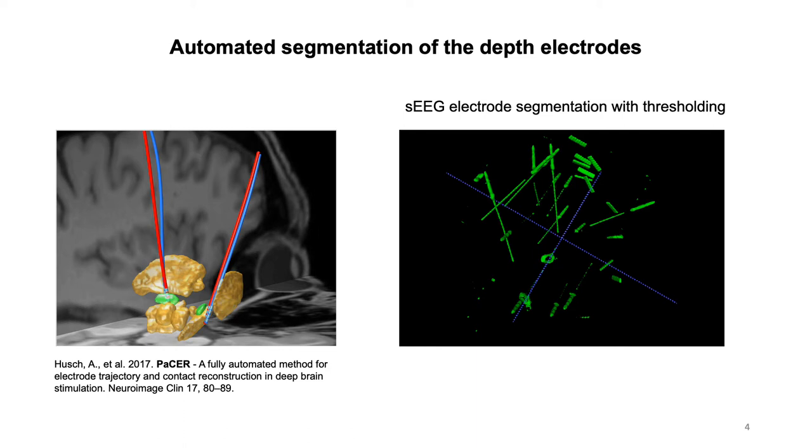Automated and accurate electrode extraction approaches are existing for DBS electrodes. However, to our knowledge, there is no available tools for segmentation of SEEG electrodes. But we wanted by including postoperative DBS scans to increase dataset size and ensure the network to learn a solution that is robust towards all kinds of depth electrodes.